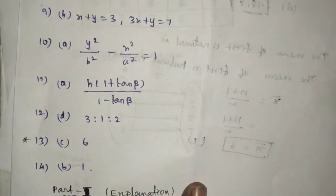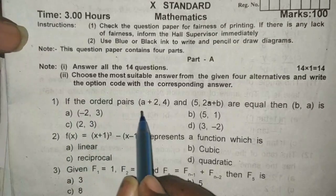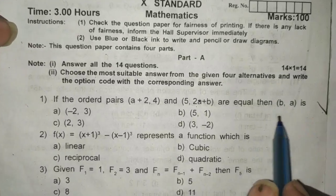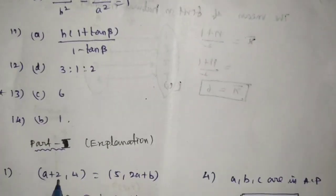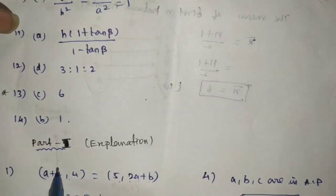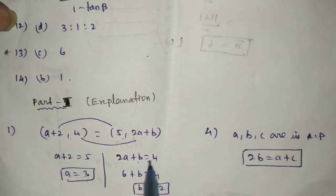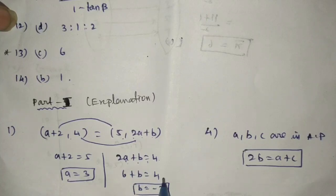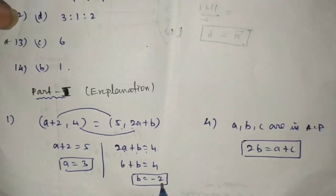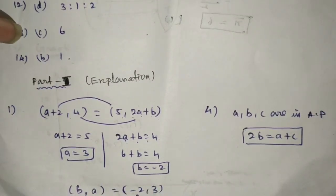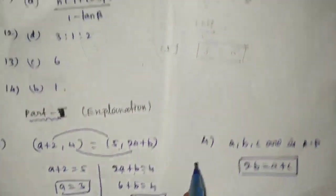Question 1: The answer is already in the book. Given (a+2, 4) and (5, 2a+b), equate: a plus 2 equal to 5, so a equals 3. Then 2a plus b equals 4, substituting a equals 3: 6 plus b equals 4, so b equals minus 2. Answer is (minus 2, 3).